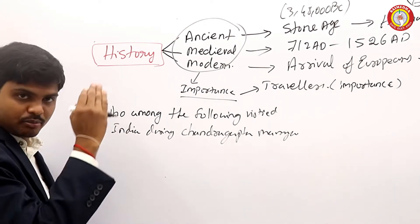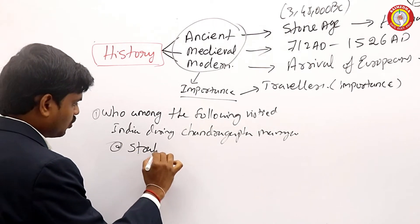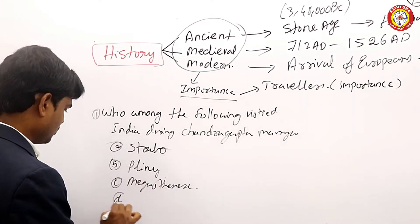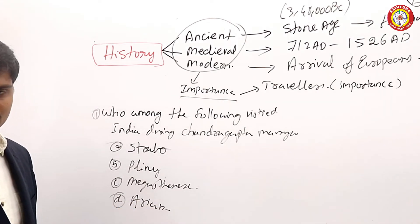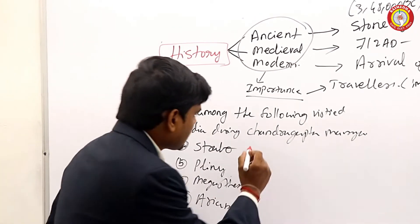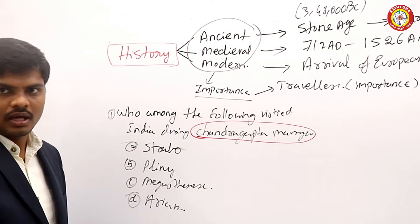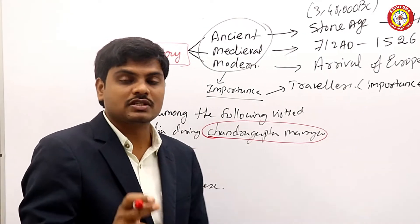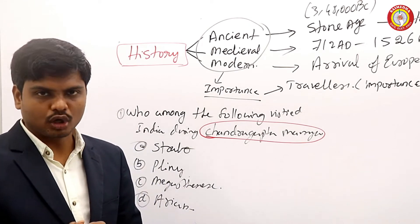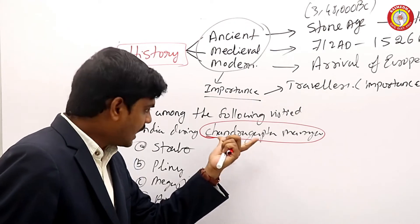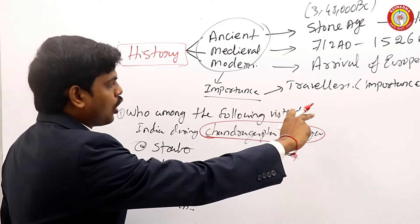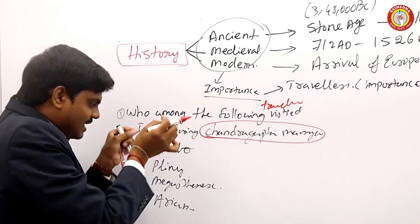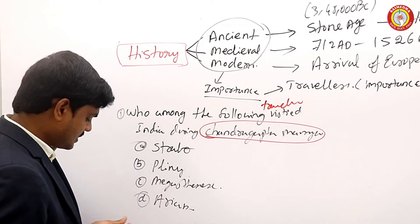That question was asked in previous examinations, with options like Strabo, Pliny, Megasthenes, and Arrian. Such a question is asked because Chandragupta Maurya is a very powerful ruler and the founder of the Mauryan dynasty. He was responsible for the defeat of Nanda and Seleucus Nicator, a Greek king. That's the reason they question which traveler visited during his rule. The answer is Megasthenes.